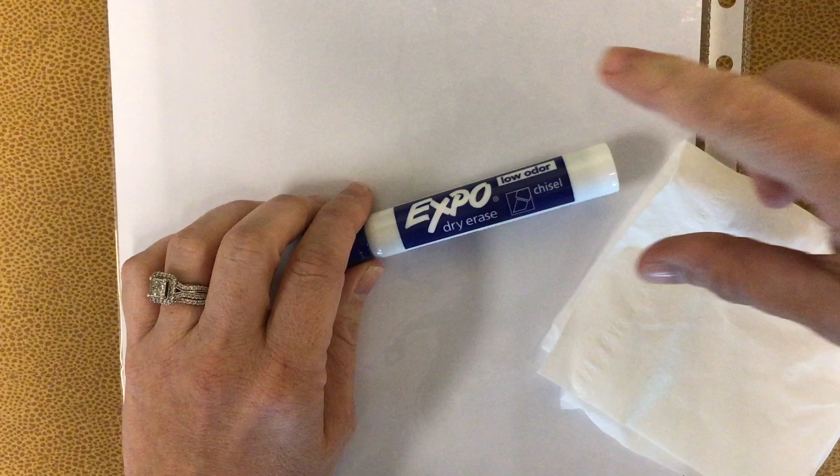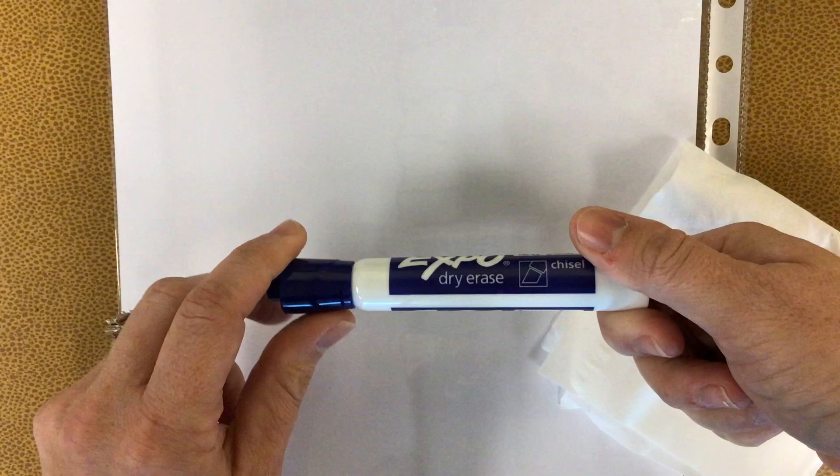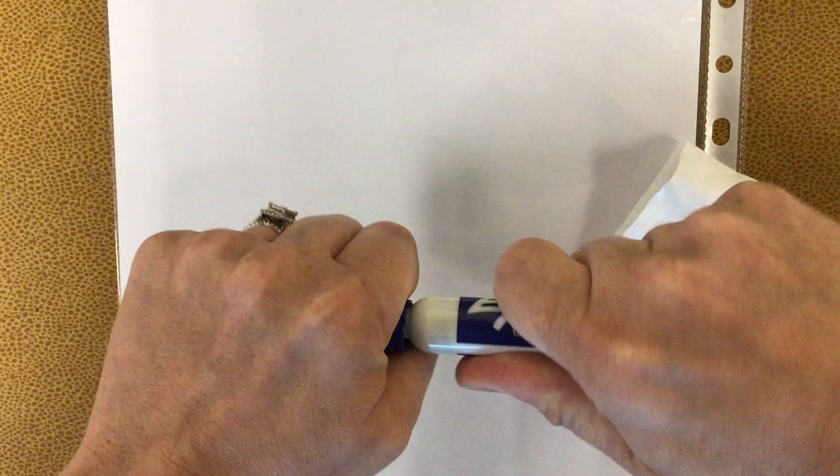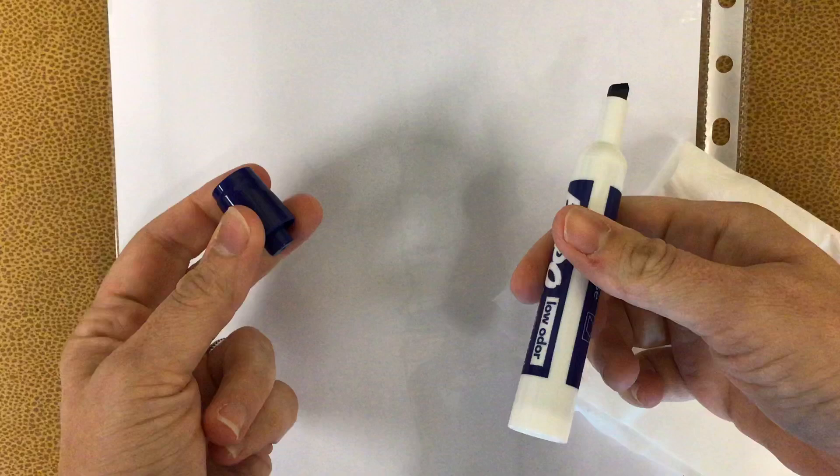Okay, so the first thing I want to show you is this marker. Sometimes they can be a little bit tricky to open and a little bit tricky to close, so let me show you a trick. When you want to open the marker, you're going to take the lid, and you're going to twist it, and you're going to pull. See how I did that?